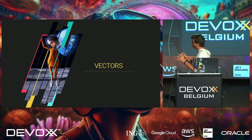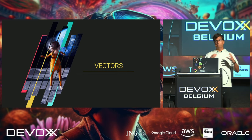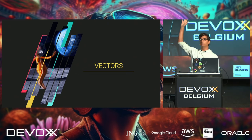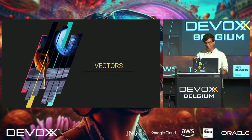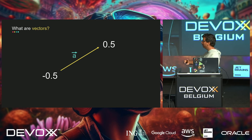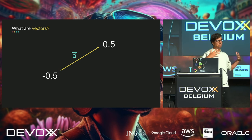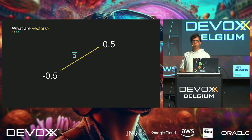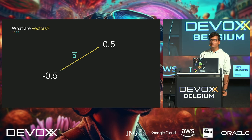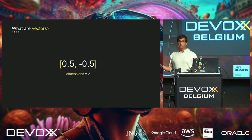Unfortunately, before we go right into vector databases we need to understand something very important: vectors. Not everybody here knows what vectors are, so thank God I added these slides. Mathematically speaking, a vector represents length and direction — that's the notation you'll see. Thankfully we don't really care about the mathematical notation; we can just say a vector is an array of numbers.